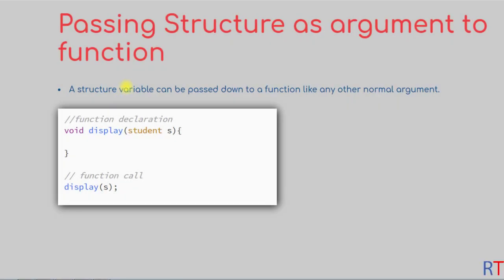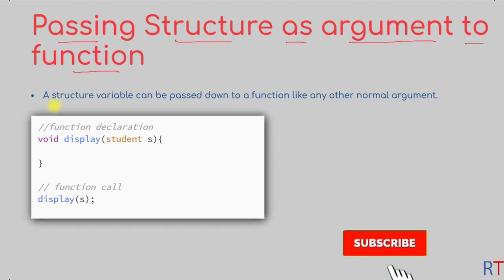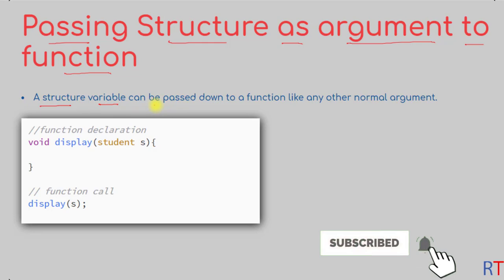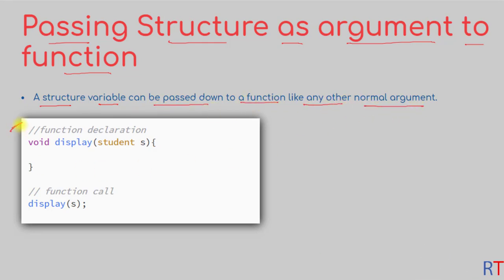In this video we're going to talk about how we can pass one structure as an argument to a function. A structure variable can be passed to a function like any other normal argument. In the function declaration, in the parameter section, we have to declare one structure variable, and then whenever we call that function we can pass one variable of that structure type, and this way the structure variable will be passed to the function.